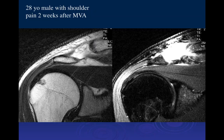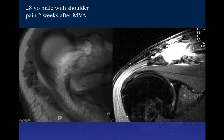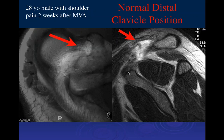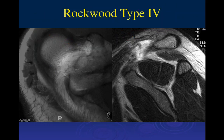The clavicle is now posteriorly dislocated rather than in its normal anterior position over the AC joint. The sagittal images confirm a tear of the CC ligament and show the clavicle displaced far posteriorly rather than in its normal anterior superior location.